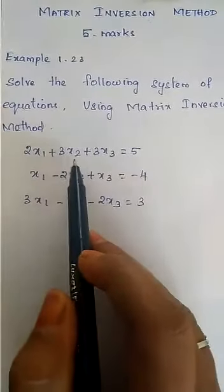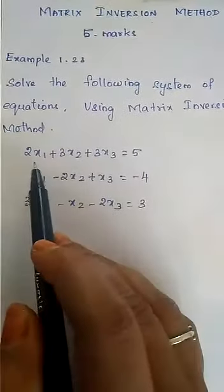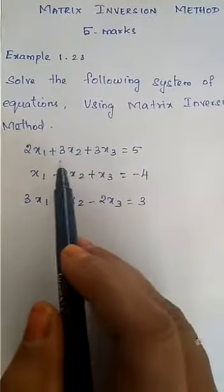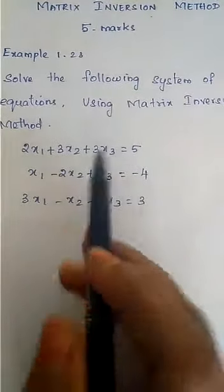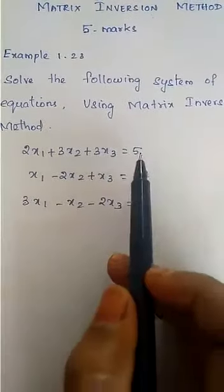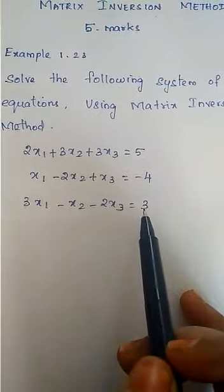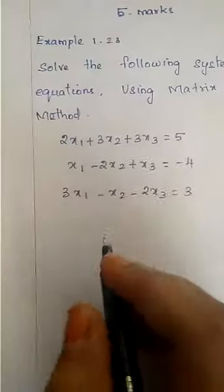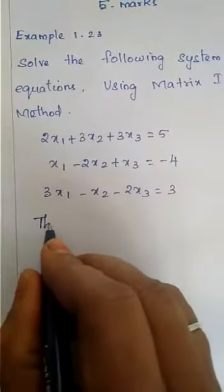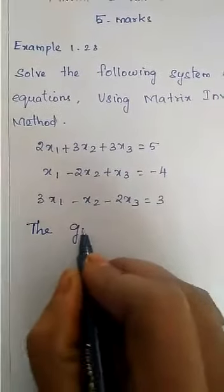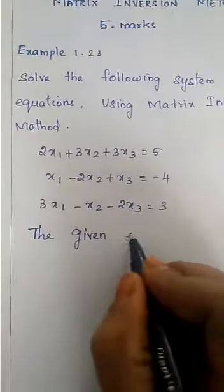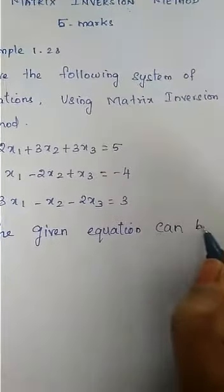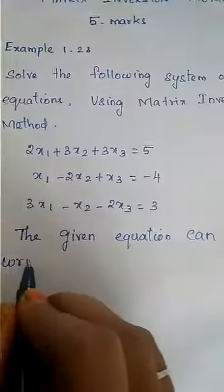The variables are x1, x2, x3. So the coefficients we should consider as capital A, the variables as capital X, and the constants as B. The given equation can be written in the form of AX equals B.